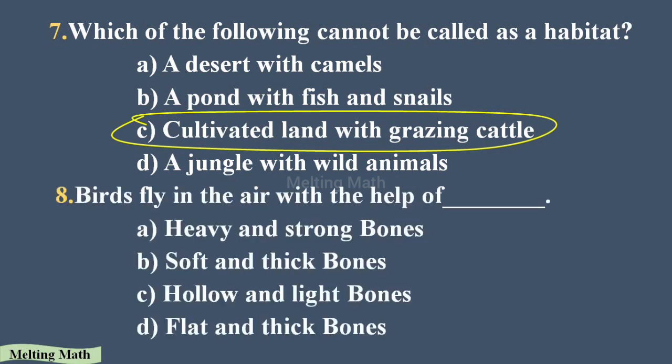Question eight: birds fly in the air with the help of dash. Options are heavy and strong bones, soft and thick bones, hollow and light bones, or flat and thick bones. As discussed in the previous video, option C is the correct answer — hollow and light bones. Hollow means they consist of fewer and lightweight bones, which is why that is the correct answer.